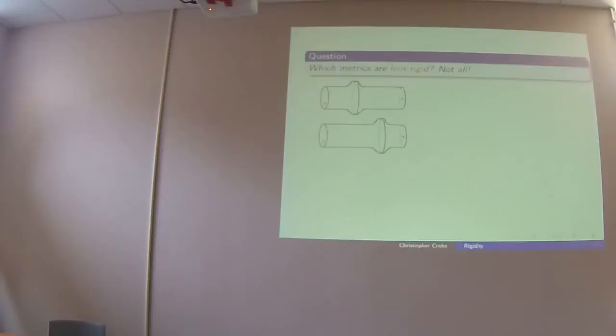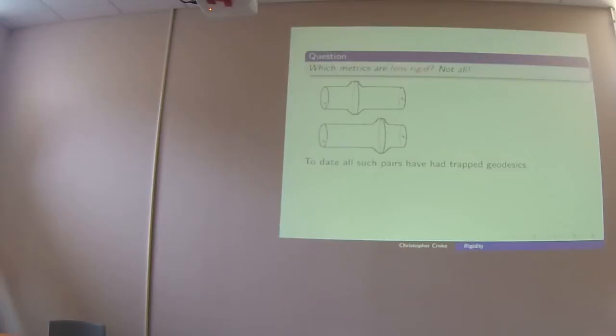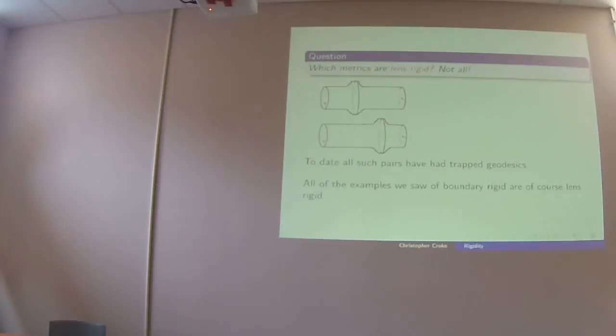So not everybody's lens rigid. To date, all pairs demonstrating non-lens-rigidity have had trapped geodesics. There are no known examples without trapped geodesics that are non-rigid. It's a question — not quite a conjecture — whether not having trapped geodesics implies lens rigidity. All of the examples in the history of boundary rigid manifolds are, of course, lens rigid too, because knowing lens data means you know all geodesic lengths, hence all boundary distances.